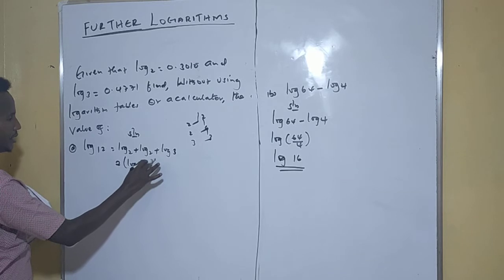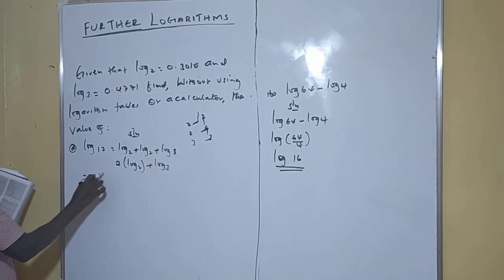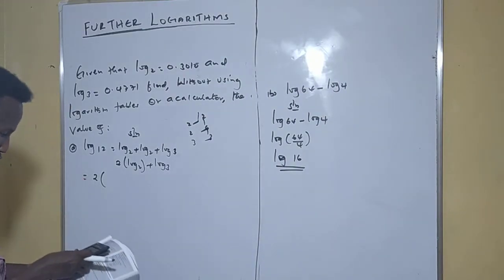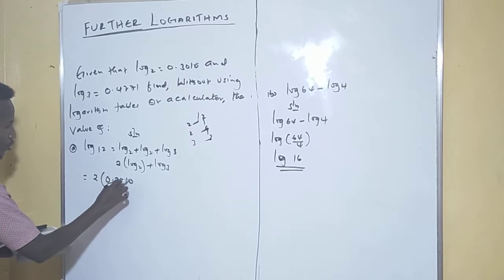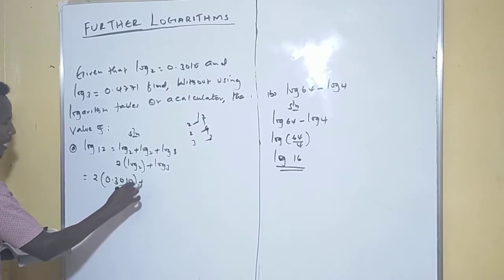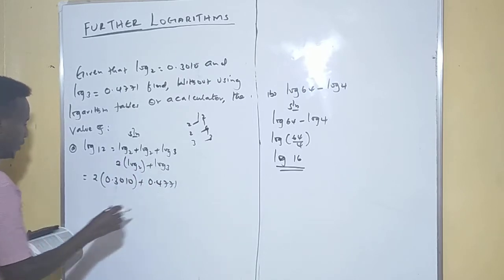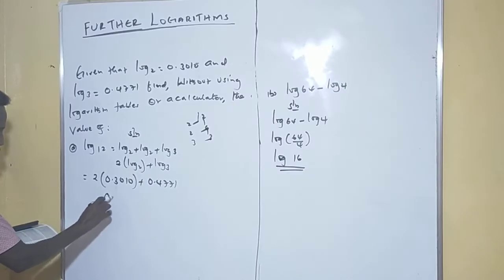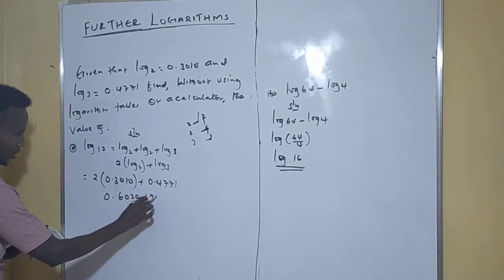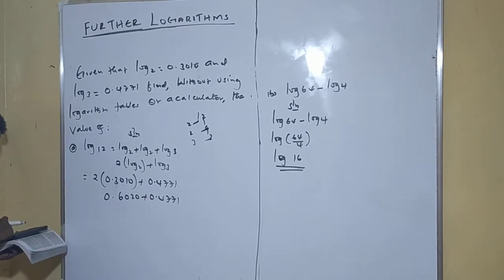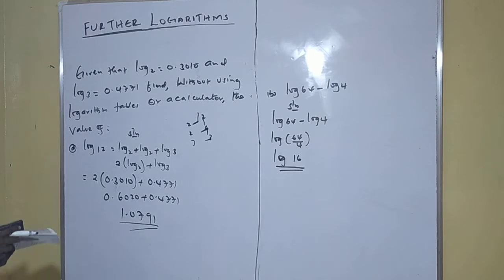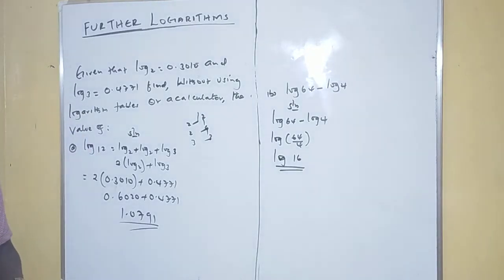This can be written as 2 times log 2 plus log 3. So we substitute: 2 times 0.3010 plus 0.4771. That gives 0.6020 plus 0.4771, which equals 1.0791. That will be the final answer for question A — just understand that.